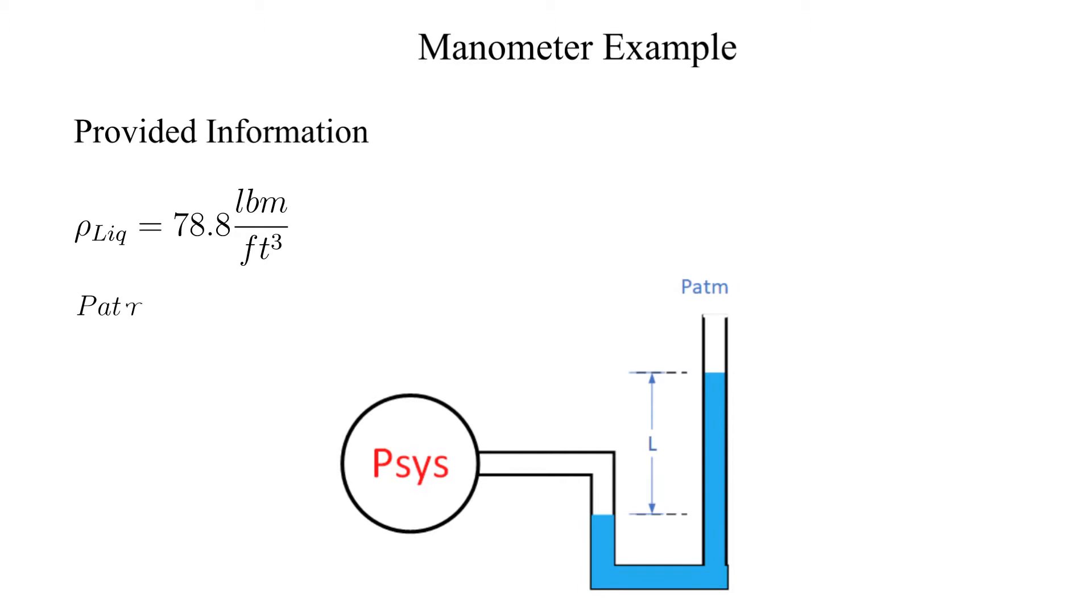Atmospheric pressure is 14.7 PSIA. The length of the liquid column L, as shown, is 60 inches.